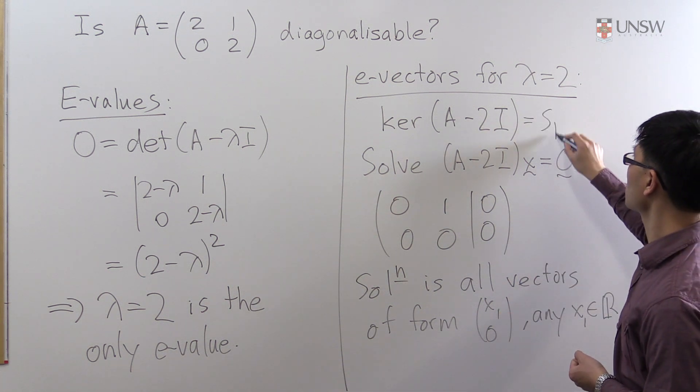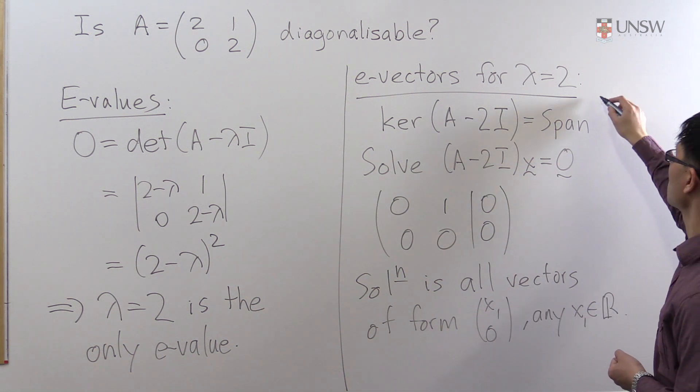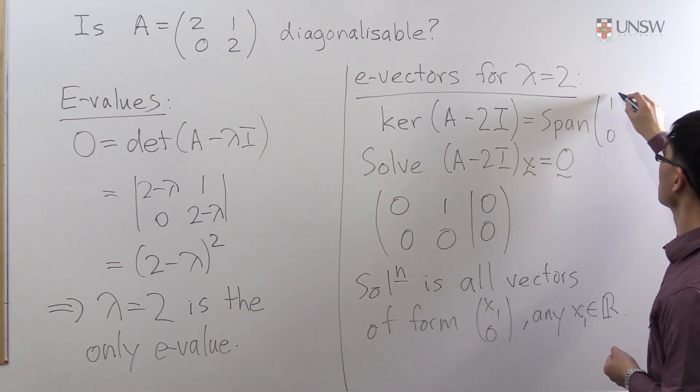And which subspace is it? One way to see this is of course it's just all scalar multiples of (1, 0). So this is just the span of (1, 0).